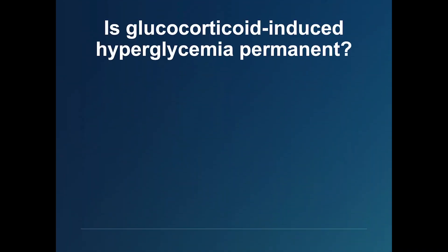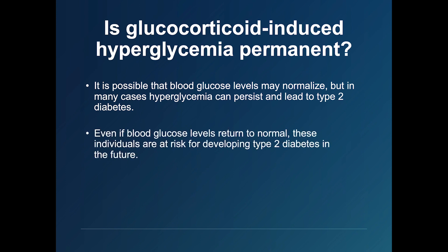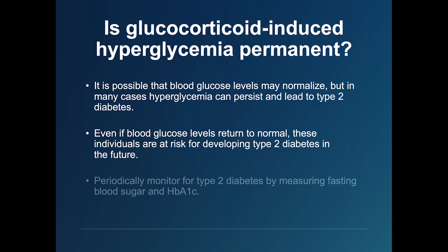You may be wondering: is glucocorticoid-induced hyperglycemia permanent for those without pre-existing diabetes? Once glucocorticoids are reduced or discontinued, blood glucose levels may normalize, but in many cases hyperglycemia can persist, leading to type 2 diabetes. This usually happens in those who were already at high risk, often those with previous insulin resistance or glucose intolerance. Even if blood glucose levels normalize after glucocorticoids are discontinued, these individuals are at risk for future type 2 diabetes and should be periodically monitored using fasting blood sugar and hemoglobin A1c levels.